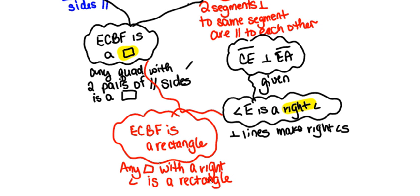The reason a parallelogram with one right angle must be a rectangle is this: parallelograms have opposite angles that are congruent, so if one angle is a right angle, the opposite angle must also be a right angle. Parallelograms also have consecutive angles that are supplementary, so if one angle is 90°, the consecutive angle must also be 90°. This forces all four angles in the parallelogram to be right angles, making it a rectangle.